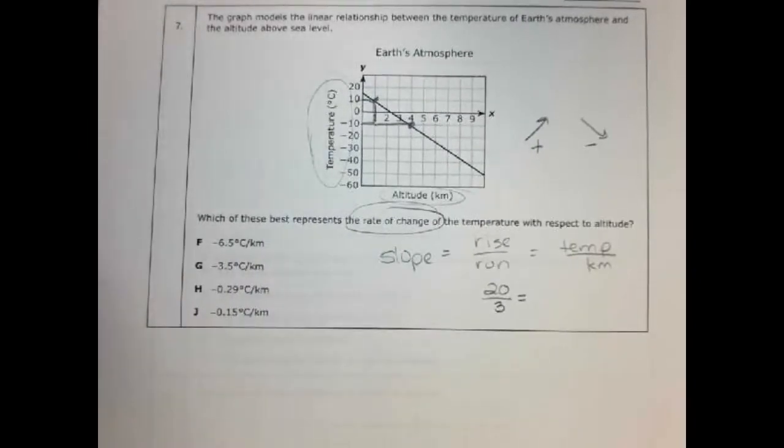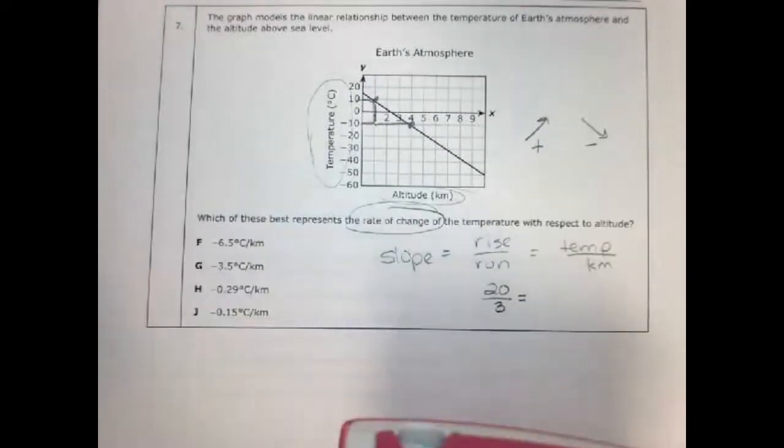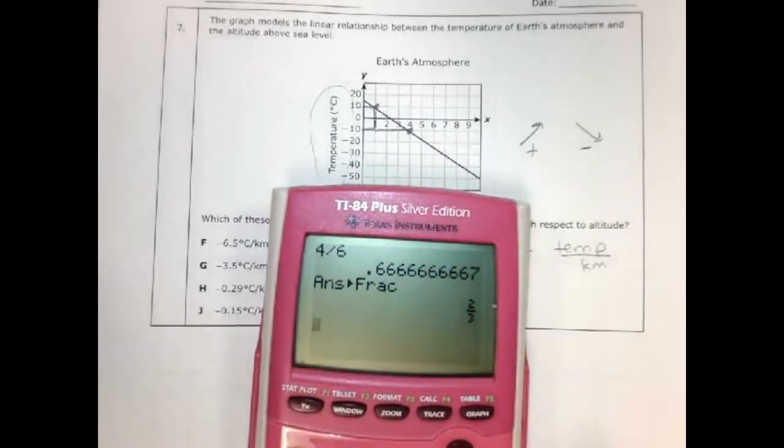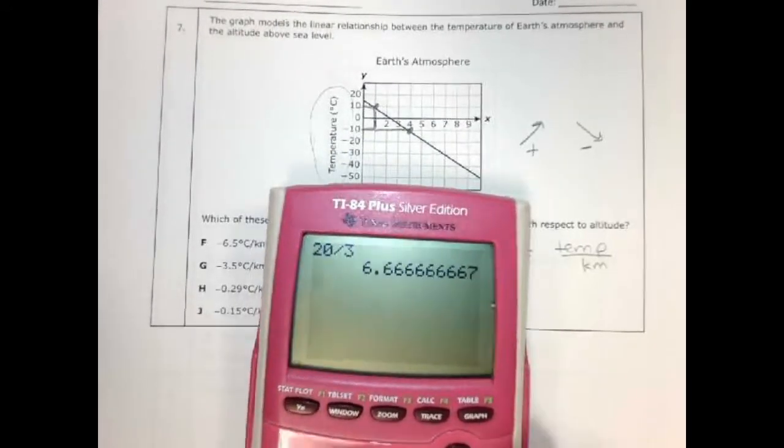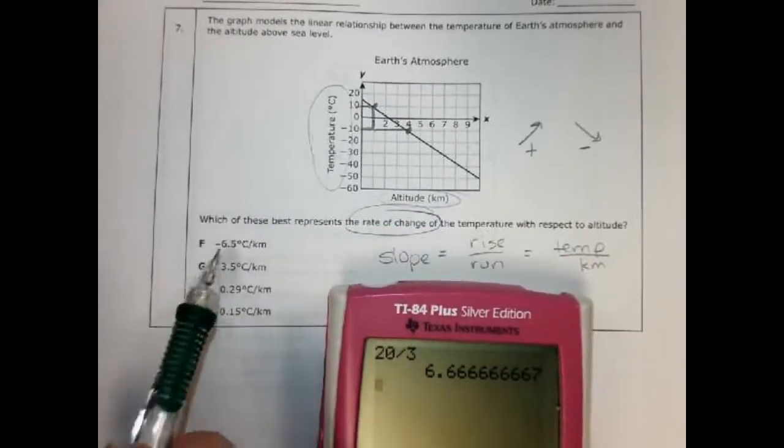And then I'm just going to divide these. 20 divided by 3. And I get 6.6. Which of those answers is pretty close to that? It's this one right here.